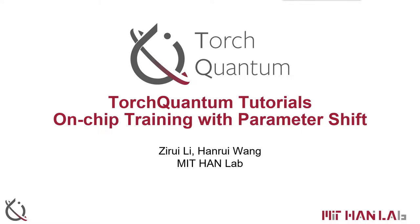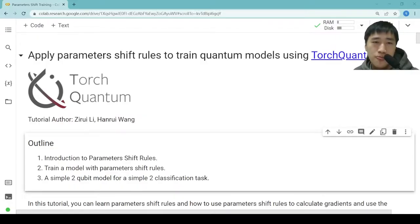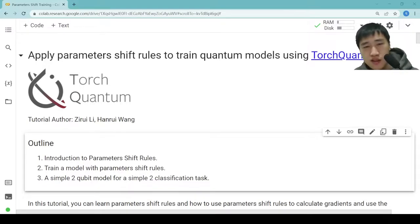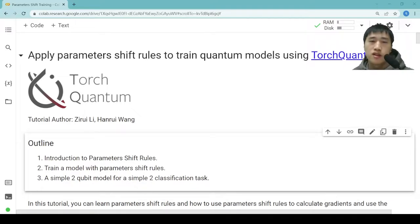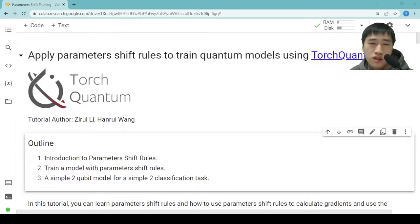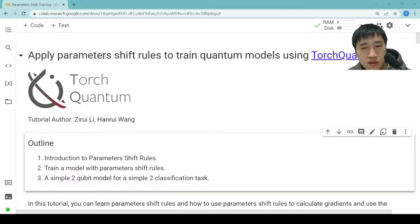Hi, welcome to our collab tutorial on on-chip training with parameter shift. In this tutorial, we will first introduce parameter shift rules, and next we will show the code to train a model with parameter shift rules. And at last, we will show an example — a simple two-qubit model for a simple two-classification test. We show this example because we want to show a real case of training a model to convergence on a real quantum computer.